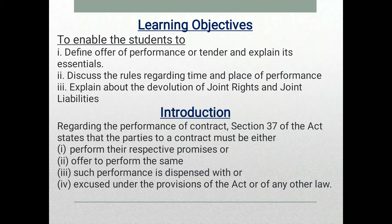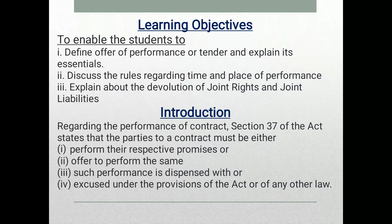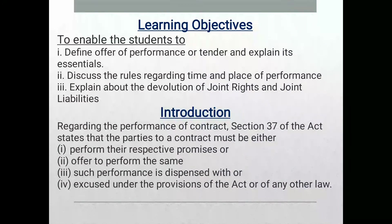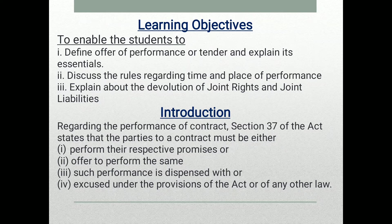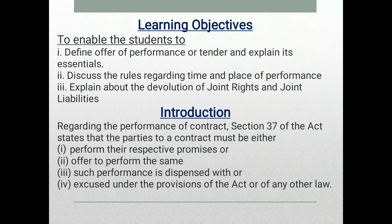Section 37 of the Act states that the parties to a contract must either perform their respective promises, or offer to perform them, unless such performance is dispensed with or excused under the provisions of the Act or any other law. This is the performance of contract.